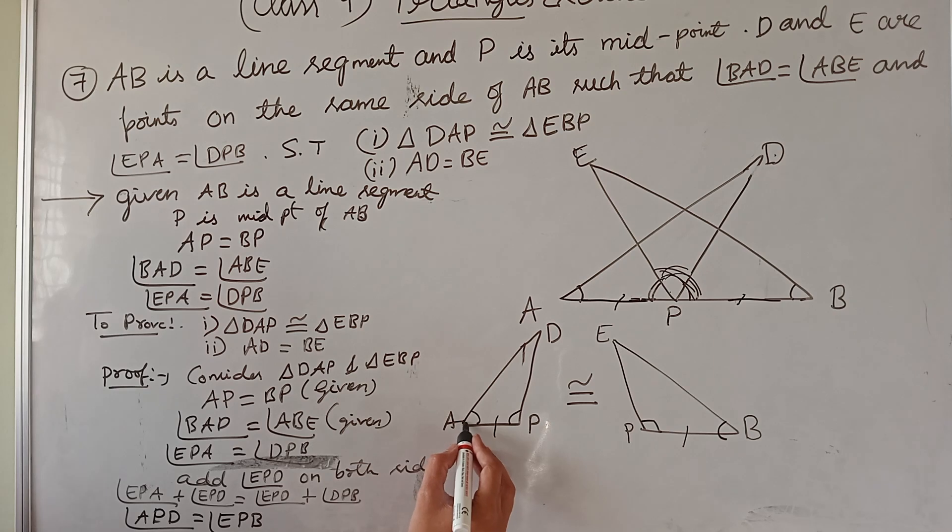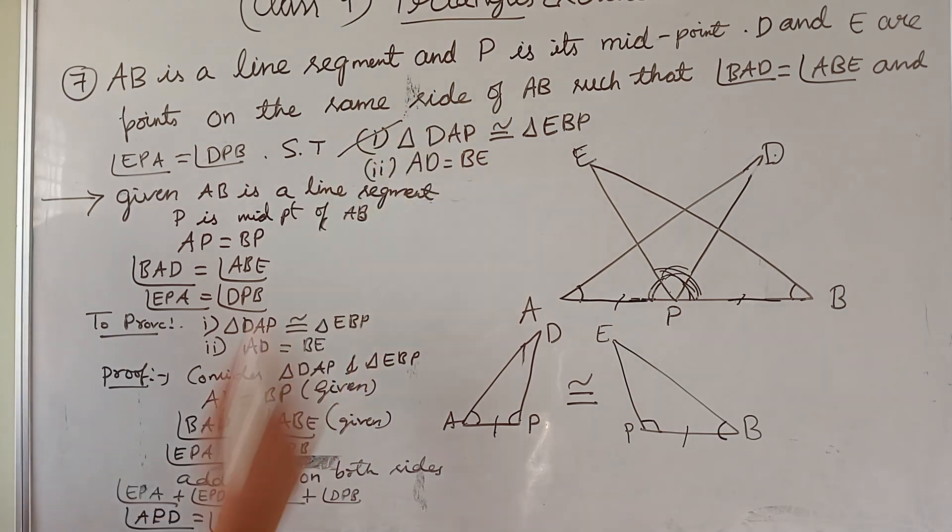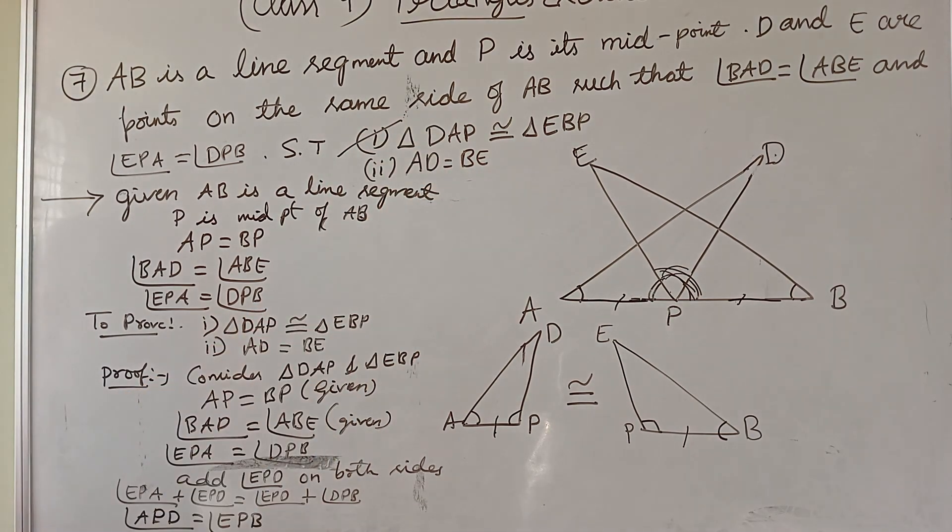Now I can tell angle side angle, that is ASA criteria. I have proved from ASA criteria these two triangles are congruent. First one I have proved. What about AD and BE? AD and BE are equal.